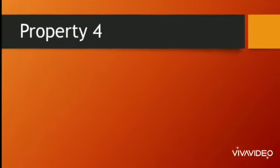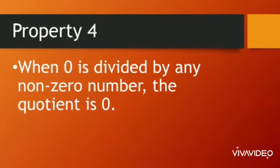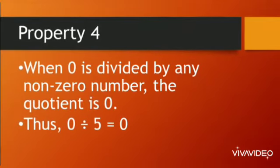So, next property is fourth property of division. According to this property, when 0 is divided by any non-zero number, the quotient is 0. Thus,